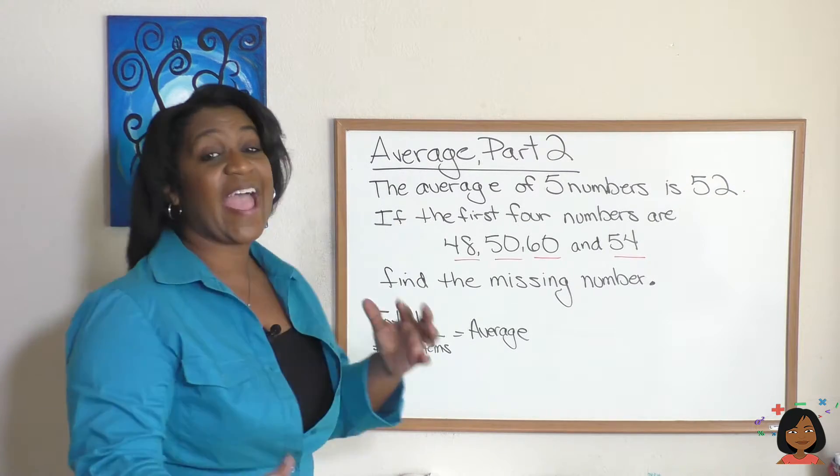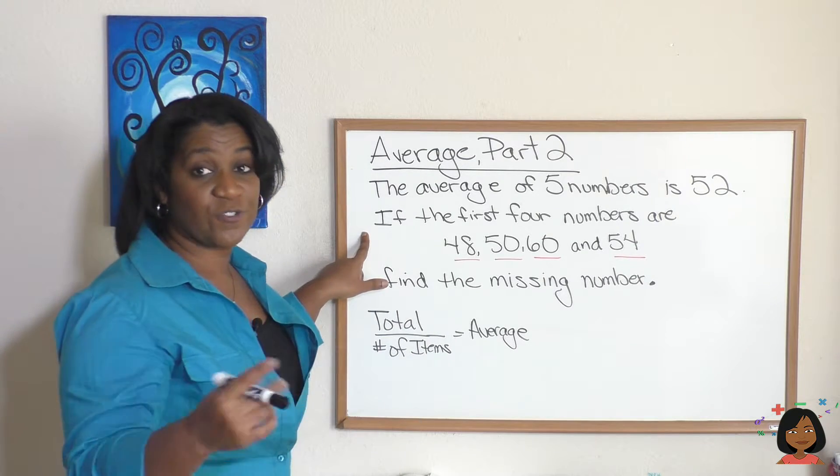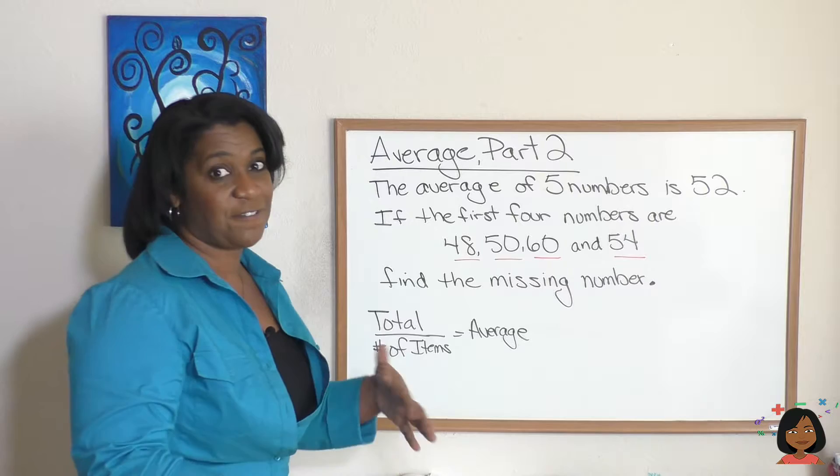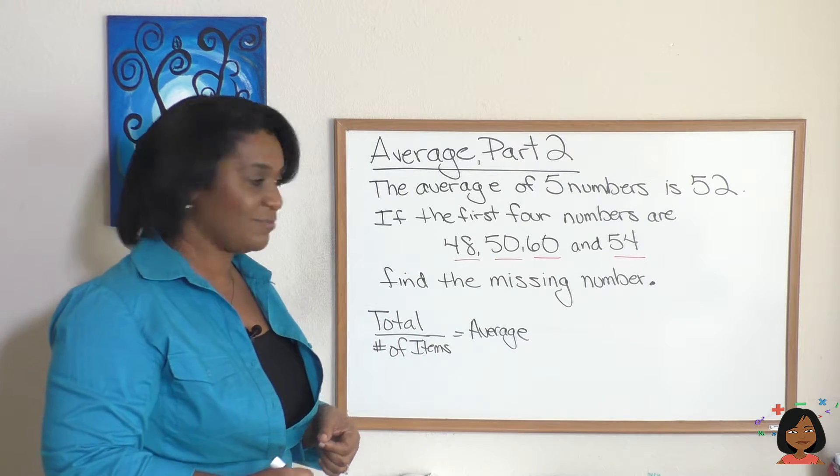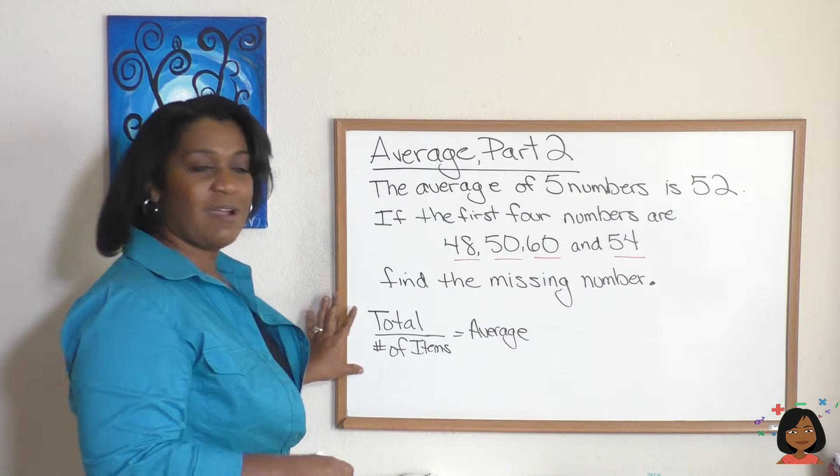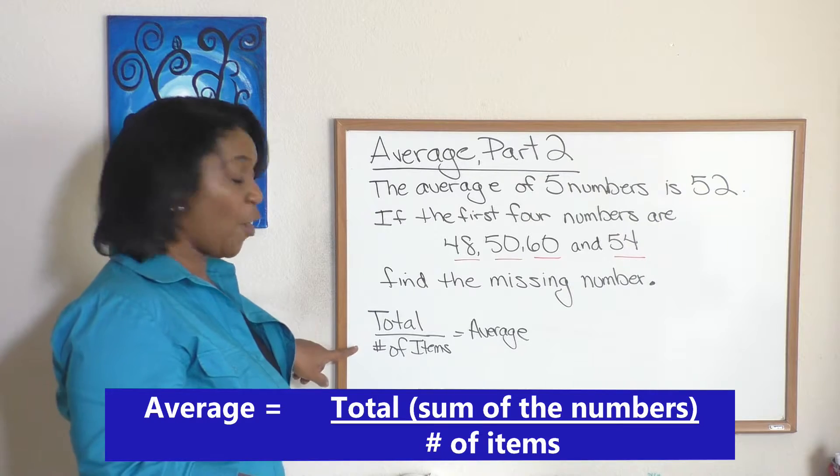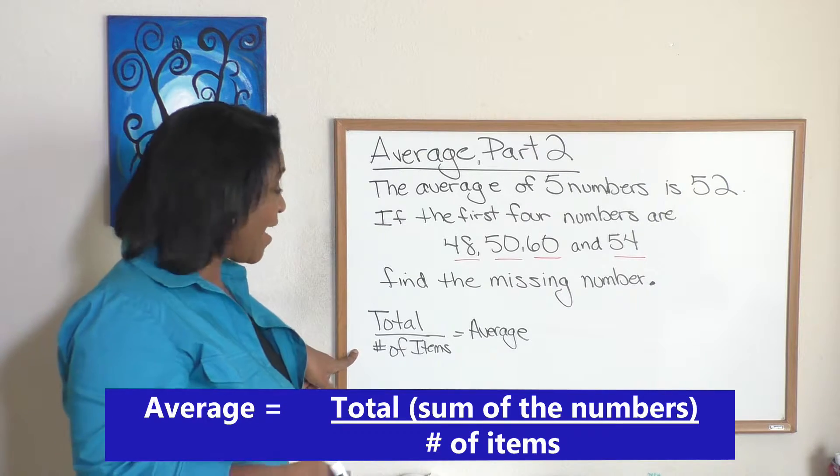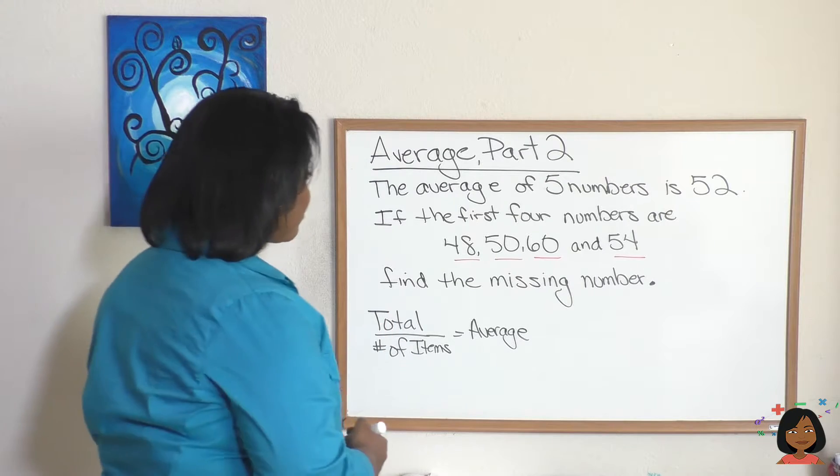Let's use another problem to see how this works. Let's try this example. The average of five numbers is 52. If the first four numbers are 48, 50, 60, and 54, find the missing number. So I've given you our equation for average. It's the total, the sum of the numbers, over the number of the items that we have, equals our average.